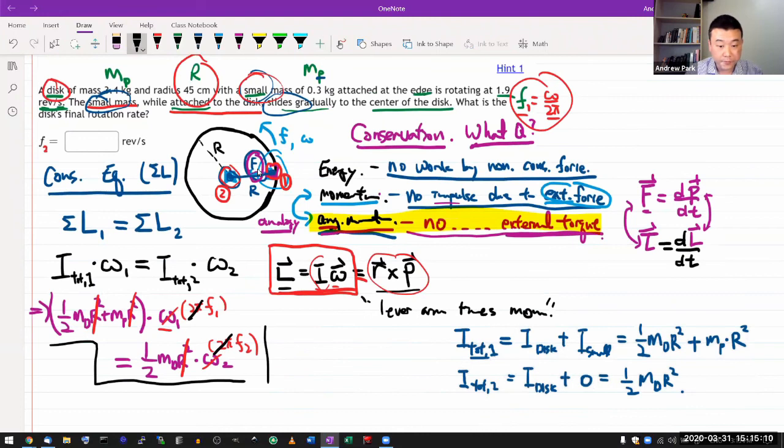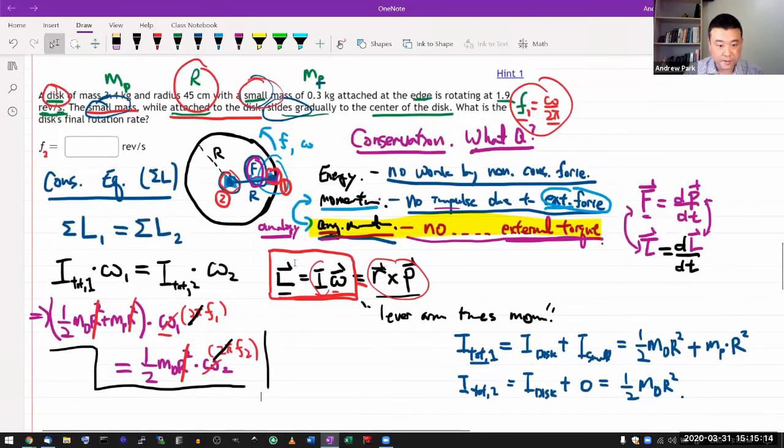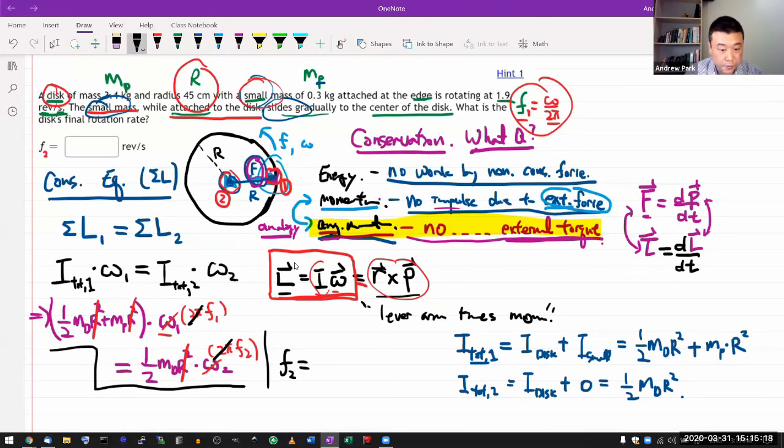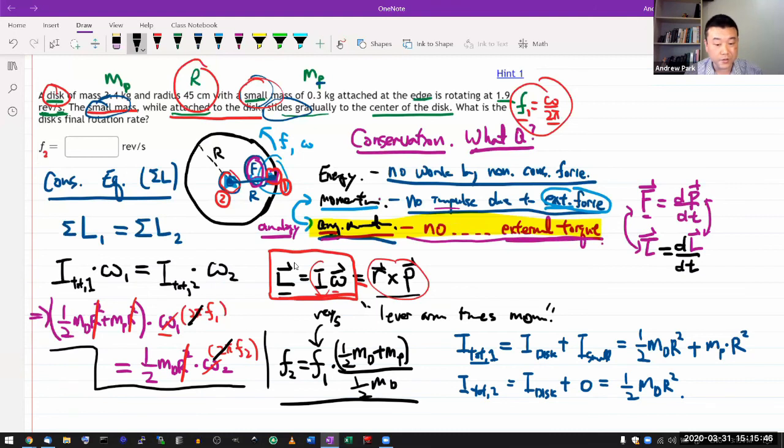Solving this for f₂, this is what I end up with. f₂ equals f₁ times the ratio of the masses: (½mₐ + mₚ) divided by ½mₐ. You can plug in the numbers. Keep this in the units of revolutions per second and you should just get the same unit answer. So really the most challenging step here is working out what strategy to apply and realizing the conservation law strategy can work and that angular momentum is conserved. Once you've figured that out, then the rest is relatively simple.